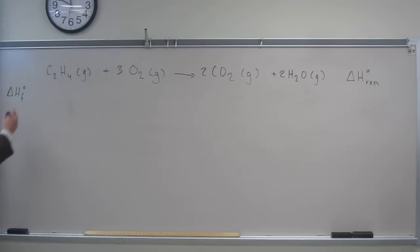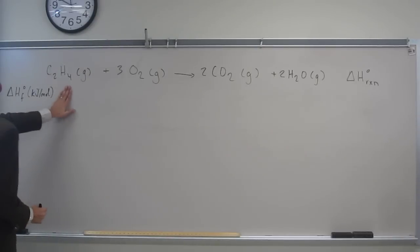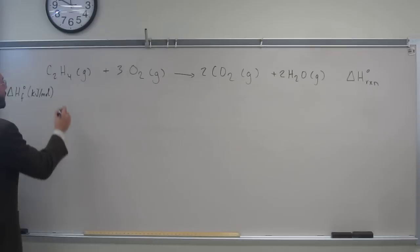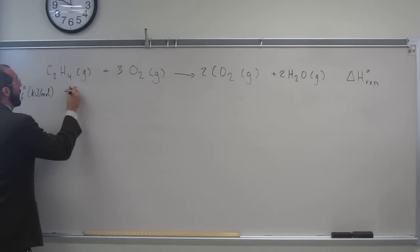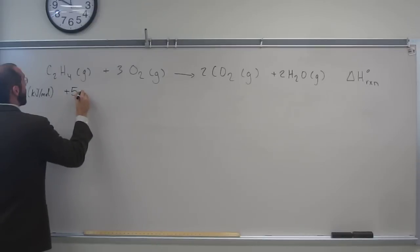So heat of formation is in units of kilojoules per mole. Help me out by looking at the table. What is the heat of formation of ethylene here? Plus 52.3.